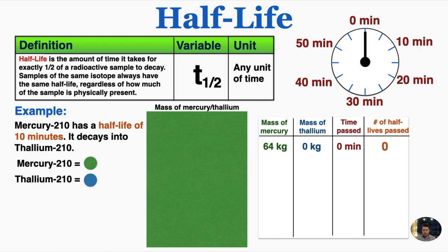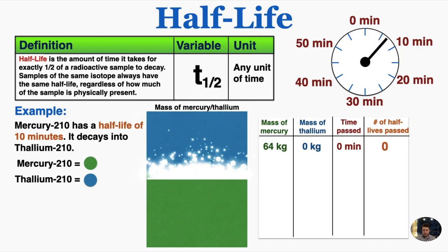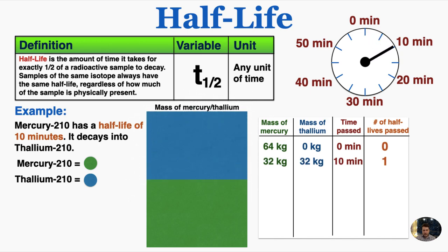So we're starting with 64 kilograms. There's no thallium present yet, and no time has passed. If mercury-210 has a half-life of 10 minutes, that means that after 10 minutes pass, half of the mercury will have decayed into thallium. So at the 10-minute mark I only have 32 kilograms of mercury left, 32 kilograms are now thallium, 10 minutes have passed, and one half-life has passed.